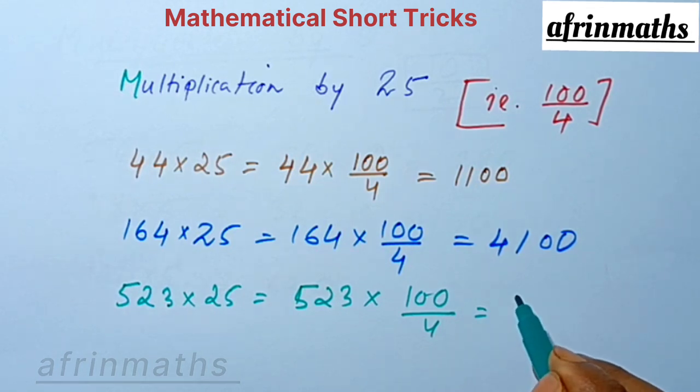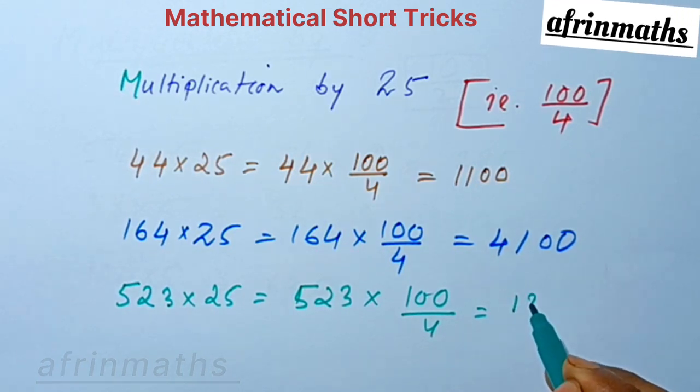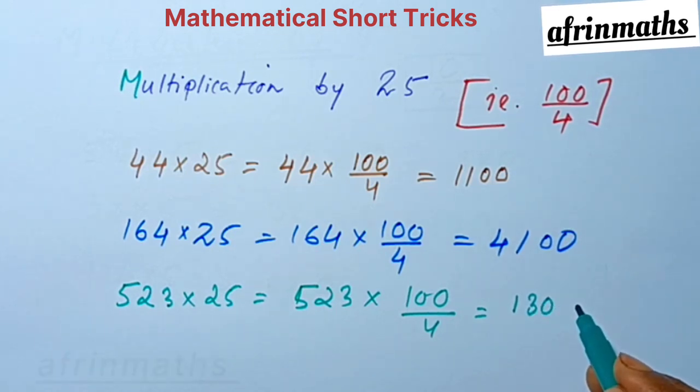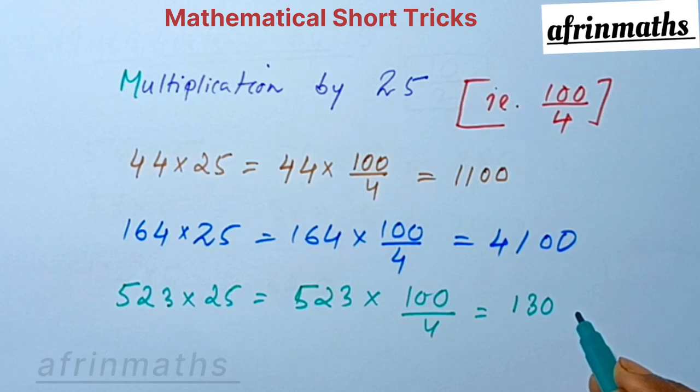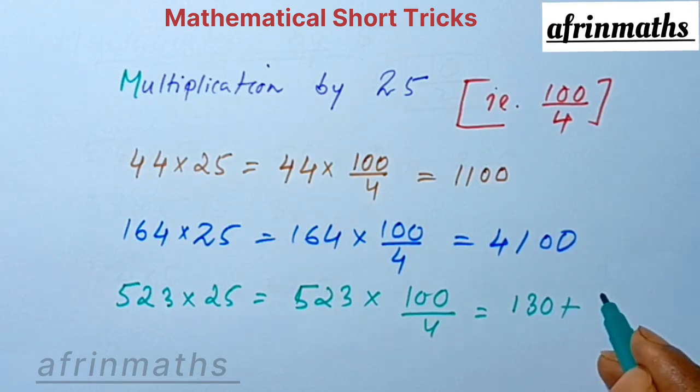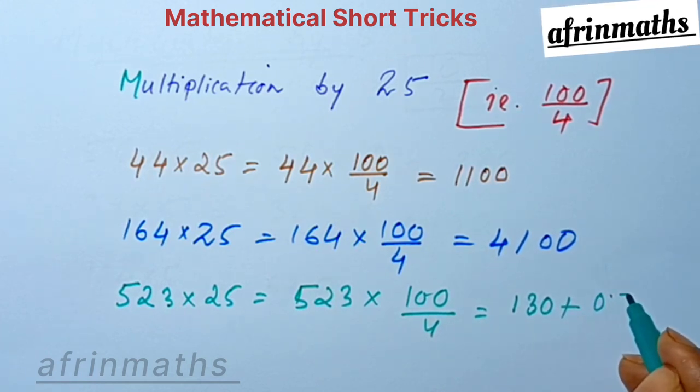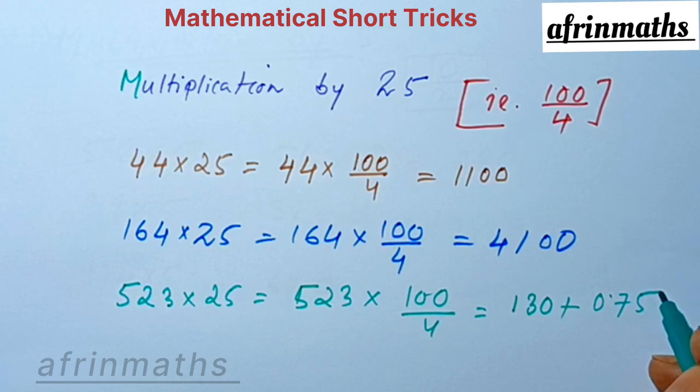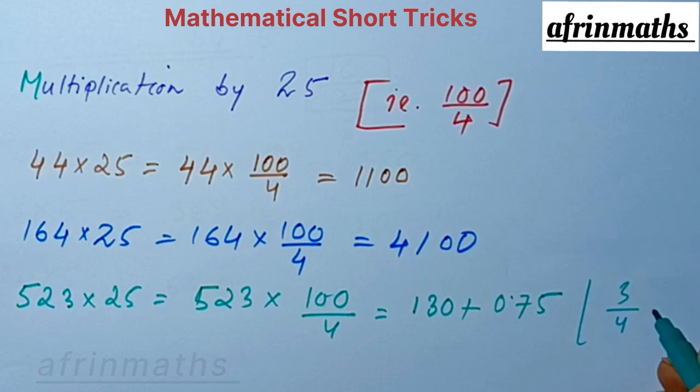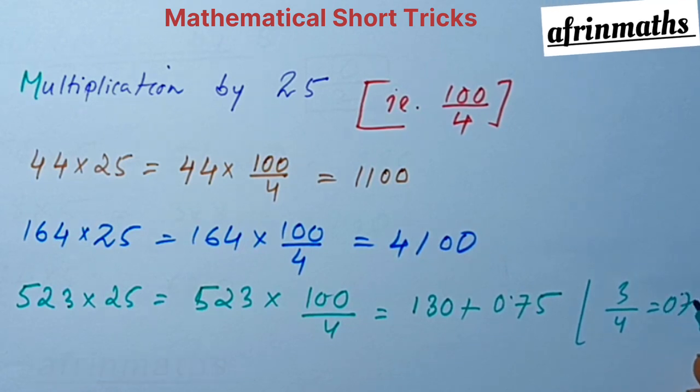We will have 130, and we will be left with 3. So we divide that 3 by 4 to get 0.75. That is 3 divided by 4, so it is 0.75.